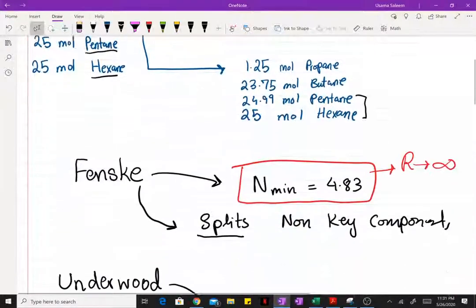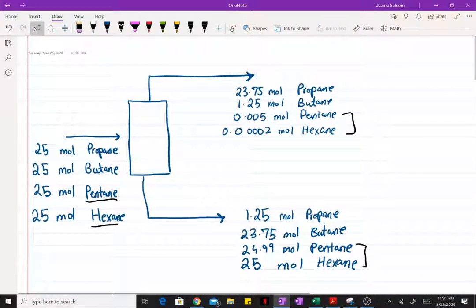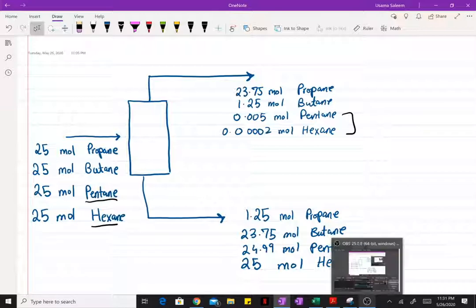Which is usually done using some form of some process simulator like Aspen. So yeah, Fenske, Underwood, Gilliland, we did it.